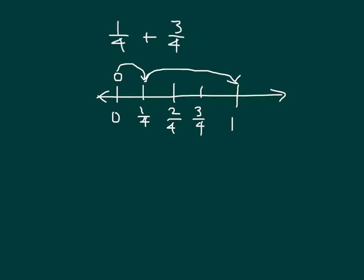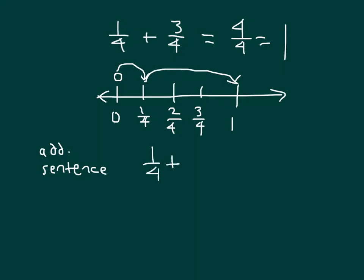So 1 fourth plus 3 fourths does equal 4 fourths, which does equal 1 whole. Showing our addition sentence one more time: 1 fourth plus 3 fourths equals 4 fourths, which does equal 1.